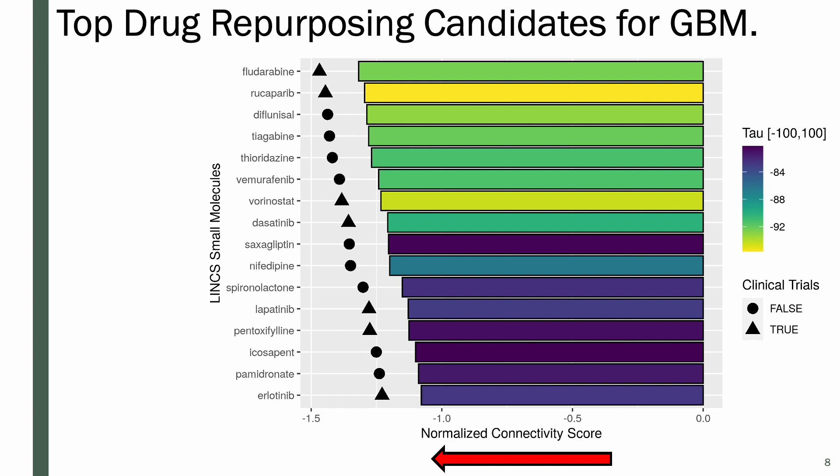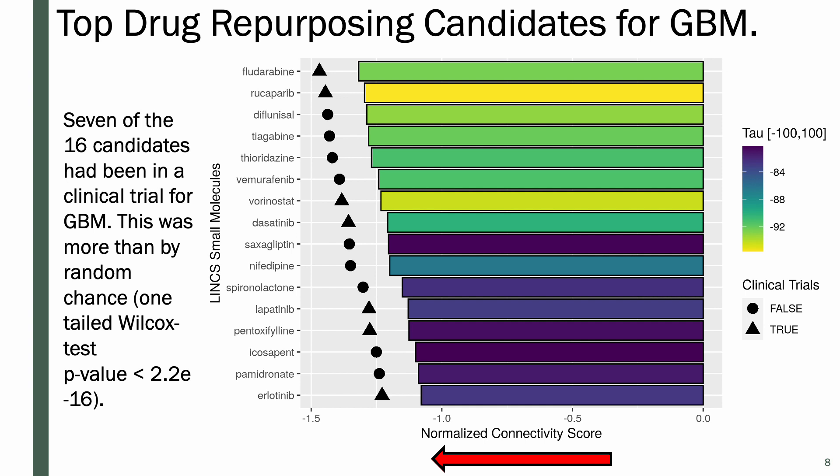It's also interesting to note that seven of the 16 candidates have been in clinical trials for GBM, and we wanted to ask if this was more than by random chance. We randomly selected 16 other FDA-approved drugs 10,000 times and asked how many of those drugs were in clinical trials for GBM as well. This was determined to be less than what we observed, based on a one-tailed Wilcoxon test.